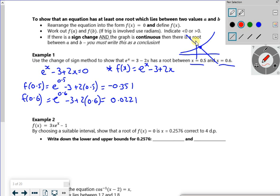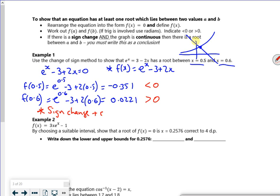AQA, we're a little bit picky. We want you to say that that's less than 0, and that's greater than 0. So what I've got here is a sign change. And the graph is continuous. So therefore, there's a root in that interval. I'll use that notation just so you see it more.